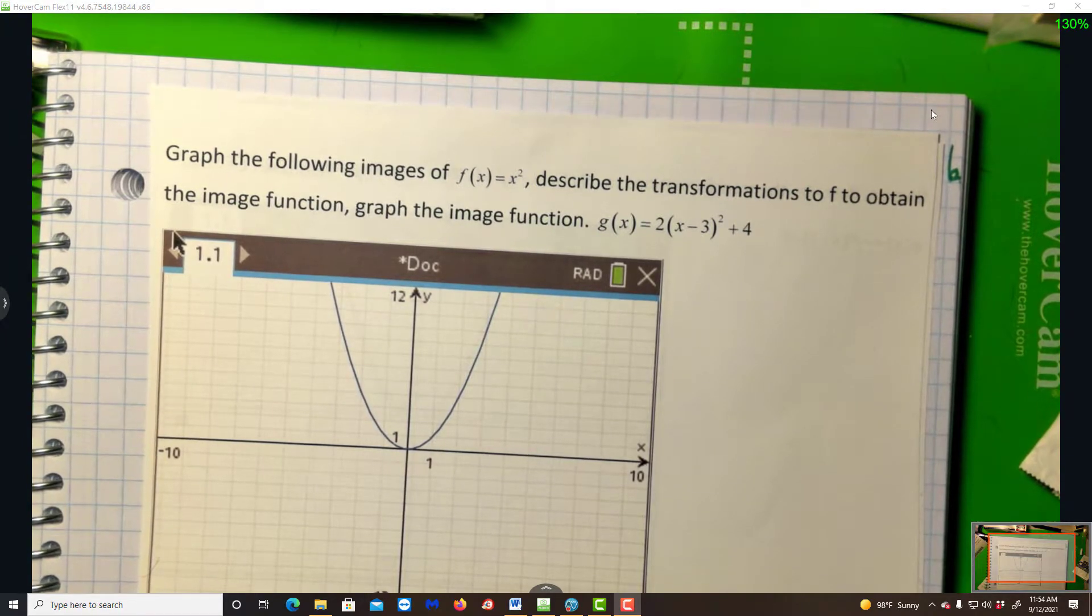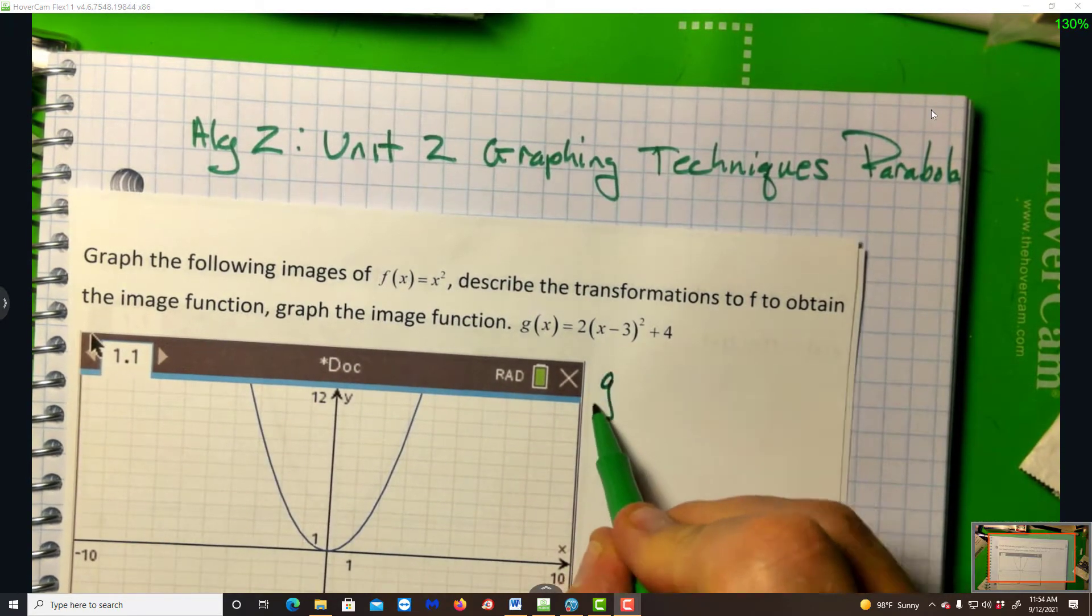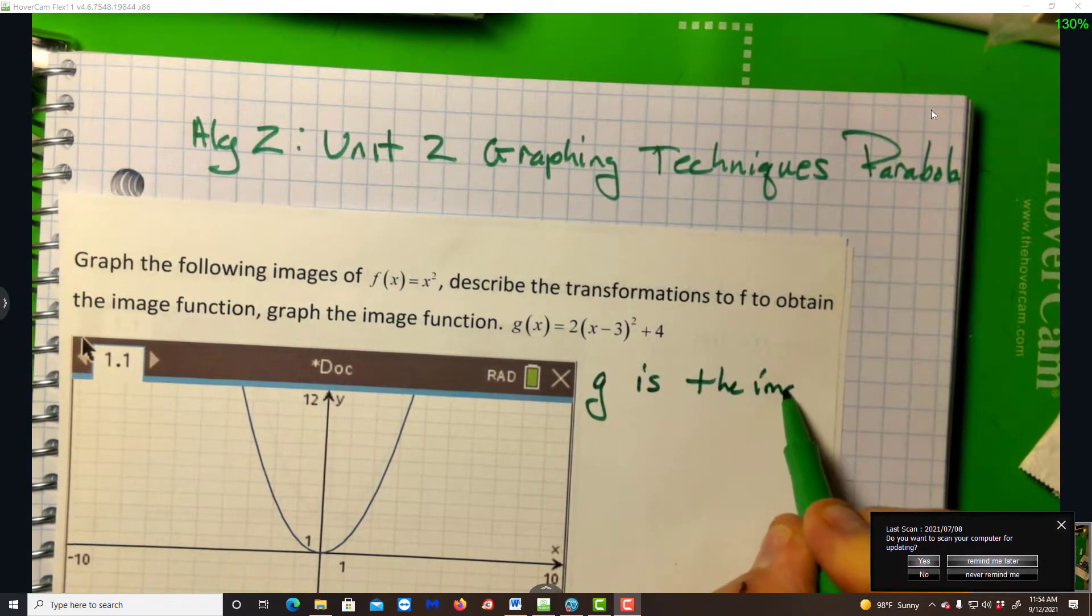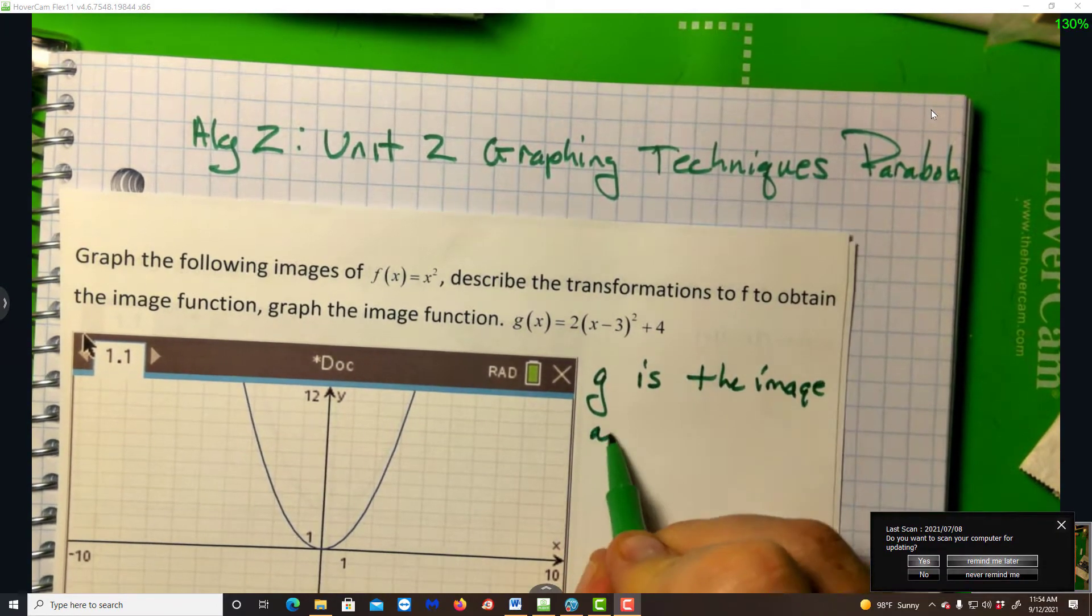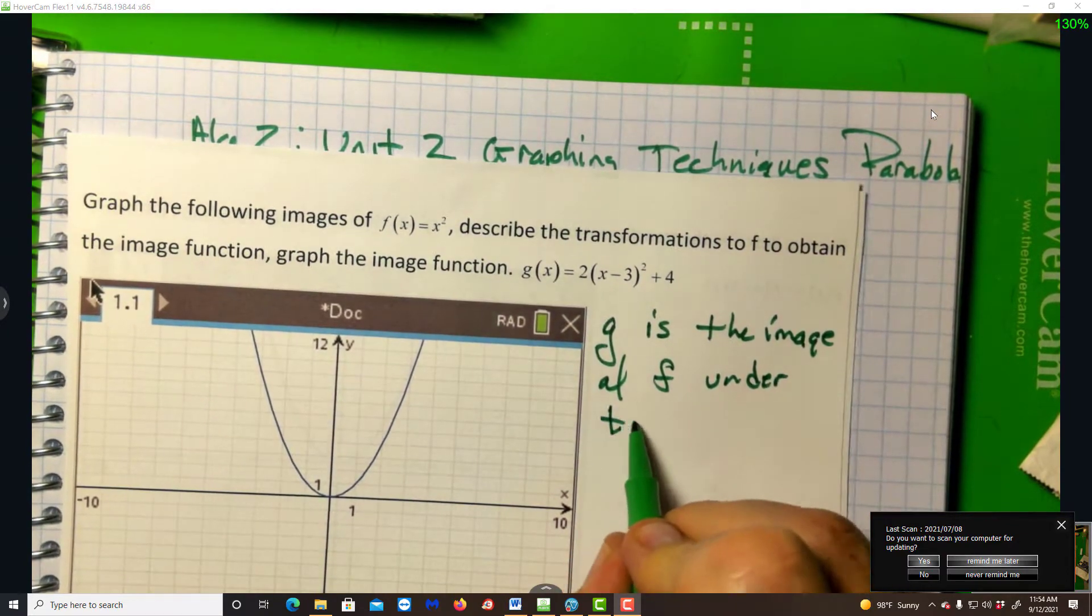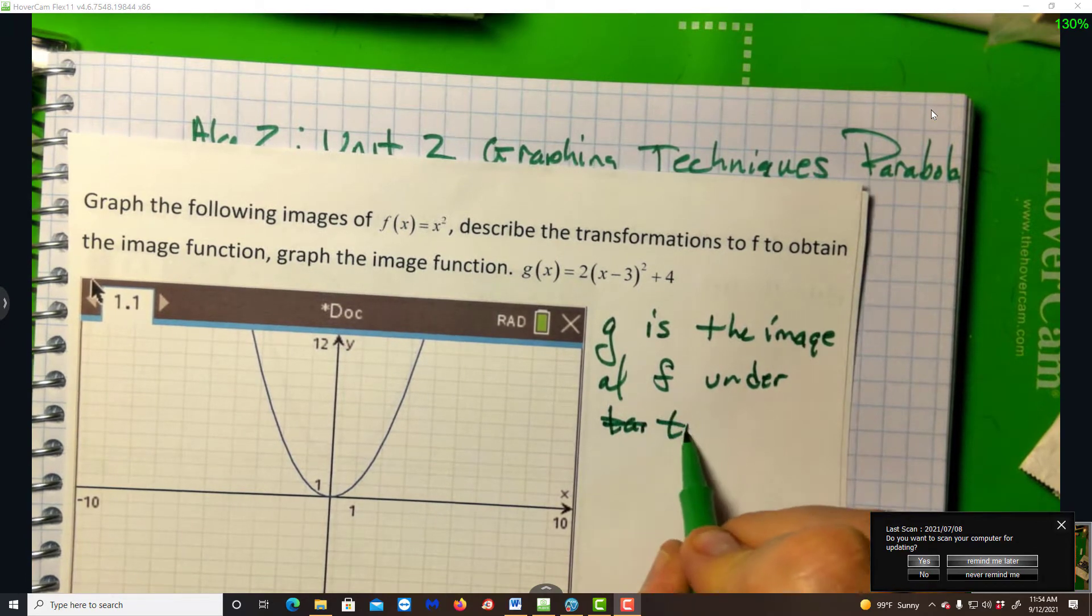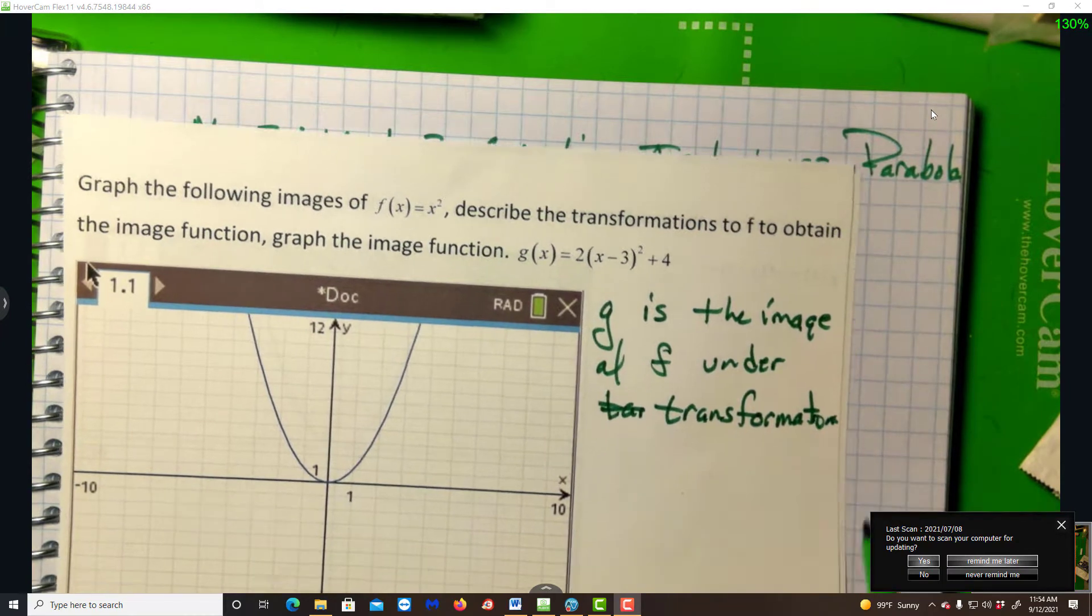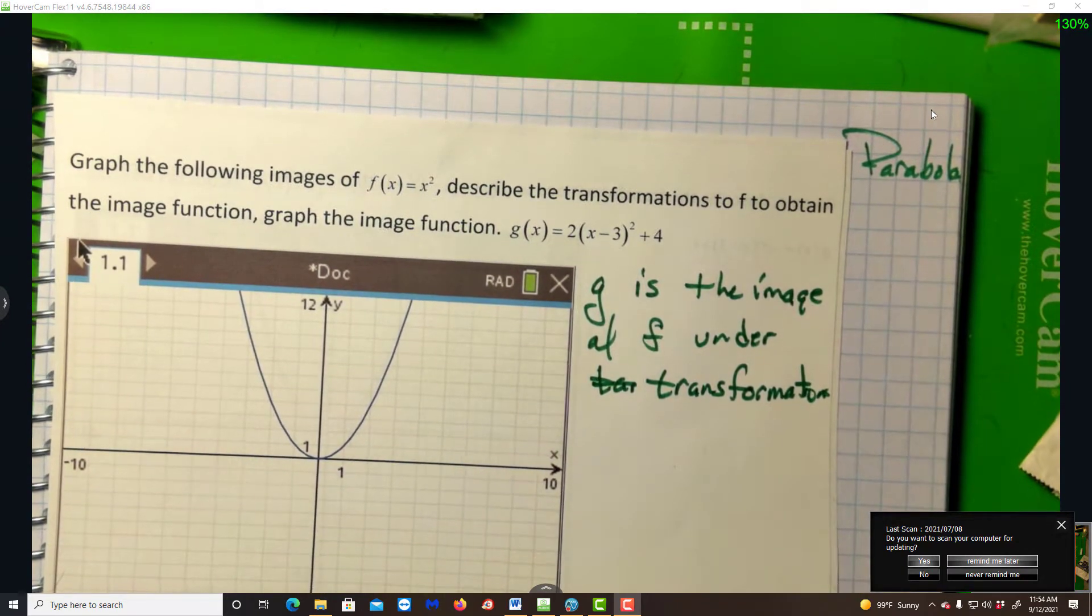One of the parent functions we briefly looked at was the base parabola y equals x squared. If you think about that, when you do this and you write it this way, g is the image of my function f under transformations. So what's that mean? Well, here's what it means.